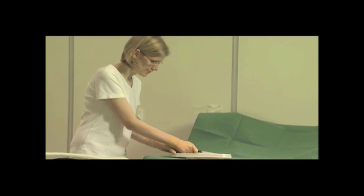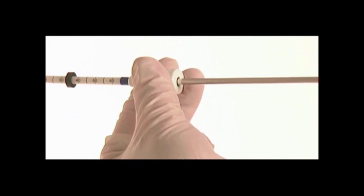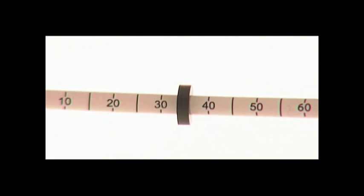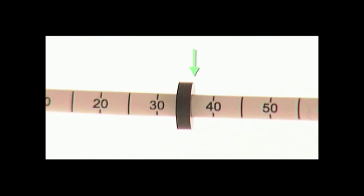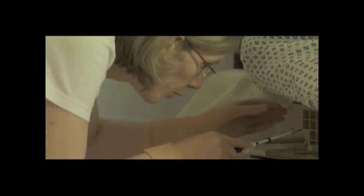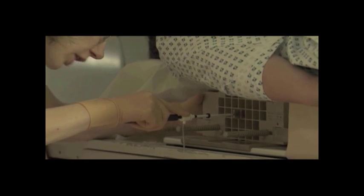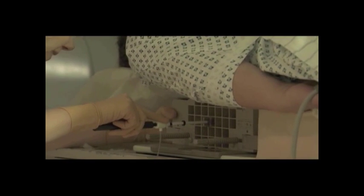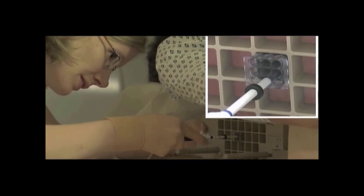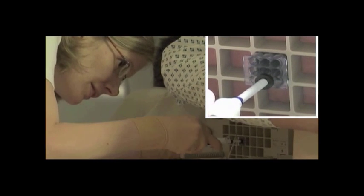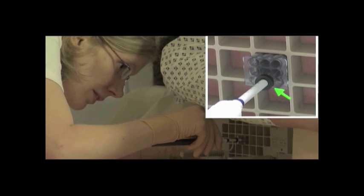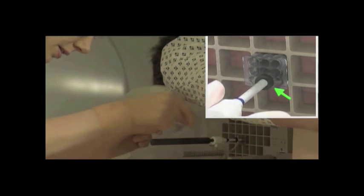Remove the remaining contents of the introducer localization set. Place the introducer stylet into the introducer sheath. Adjust the depth stop on the introducer sheath to the calculated depth of target, reading the depth from the side distal to the patient. Place the introducer sheath and stylet into the selected location of the needle guide. Holding the sheath in place, use a continuous clockwise rotating motion to advance the stylet into the breast. This motion will help minimize tenting of the skin. Continue advancing until the depth stop is flush with the needle guide in the grid.